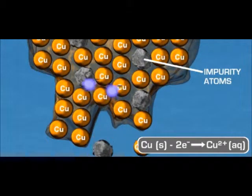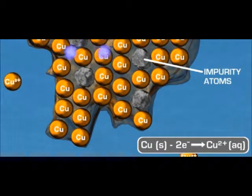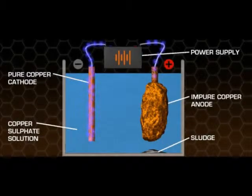As the copper anode dissolves, the impurity atoms are released and collect at the bottom of the tank as sludge. This sludge is then further refined as it contains valuable metals such as gold and silver.